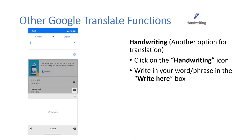Handwriting — another option for translation. Click on the handwriting icon and write your word or phrase in the Write Here box.